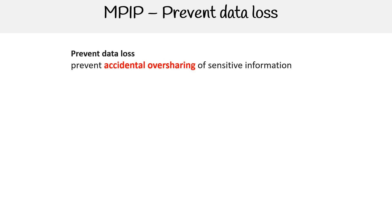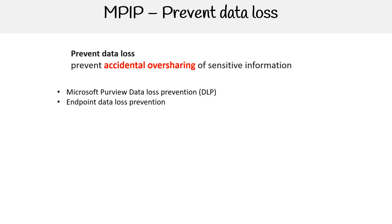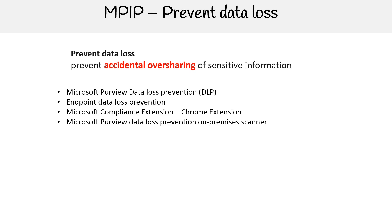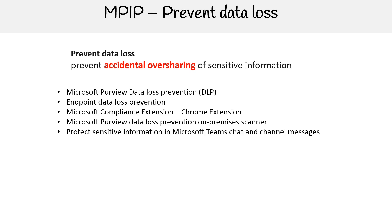Then we have Prevent Data Loss, which prevents accidental oversharing of sensitive information. Features here include Microsoft Purview Data Loss Prevention, Endpoint Data Loss Prevention, and Microsoft Compliance Extension — a Chrome extension that does compliance for you, built into your browser. There's also the Microsoft Purview Data Loss Prevention On-Premises Scanner and protection for sensitive information in Microsoft Teams chat and channel messages. We'll take a closer look at Microsoft Purview Data Loss Prevention later.